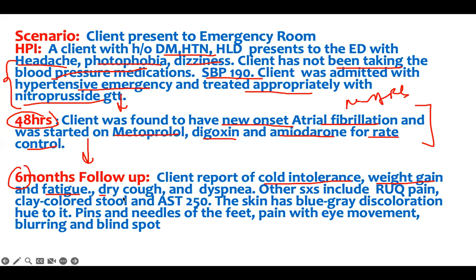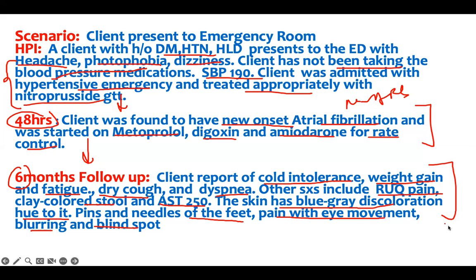What do you think? Dry cough and dizziness. Other symptoms include right upper quadrant pain, clay-colored stool, and an AST of 250. The skin has a blue-gray discoloration hue to it. Pins and needles of the feet. Pain with eye movement, blurring, and a blind spot — a bunch of information and a lot of signs and symptoms.